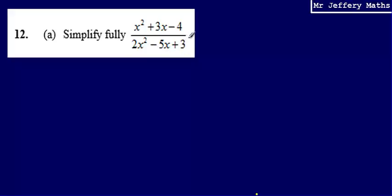So in order to simplify algebraic fractions, what I need to do is factorise both of the expressions and then see if they have any factors in common, which I can then cancel.